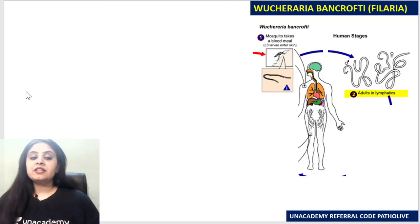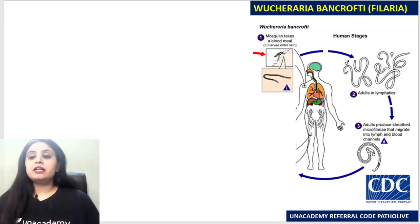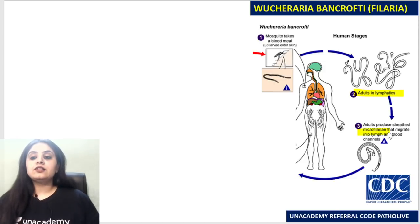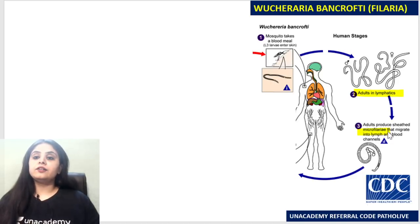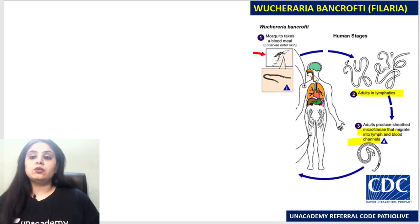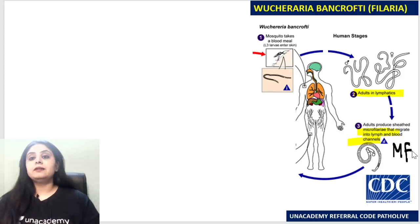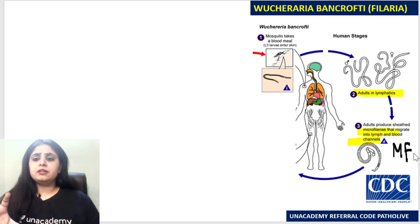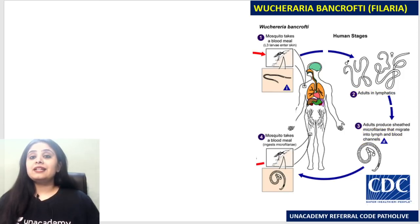Once male and female adults are present in the lymphatics, the adults will produce microfilaria. These microfilaria are released both in the lymphatics and in the blood.